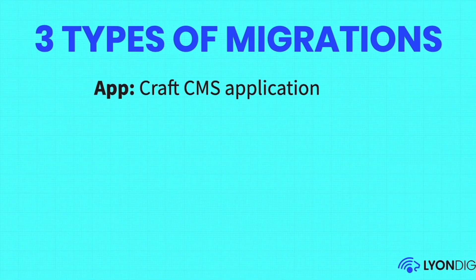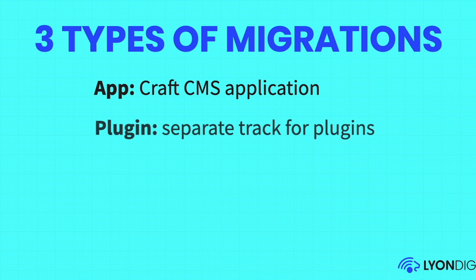There are three tracks in Craft. The application track covers changes being made to Craft CMS itself — as Craft rolls out new versions, they're tweaking the database, and these migrations run when you're upgrading Craft. There's also the plugin track, which is for all the add-on developers making changes, rolling out updates, fixing bugs, or anything that affects the database schema. Those get run for the plugin.